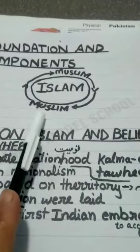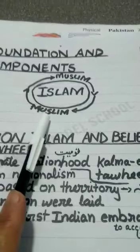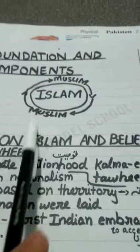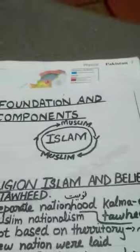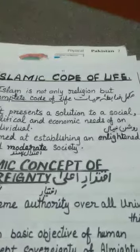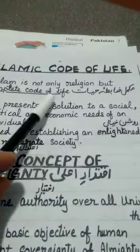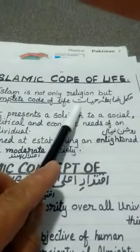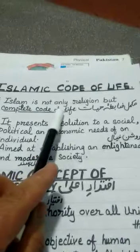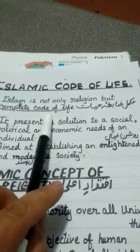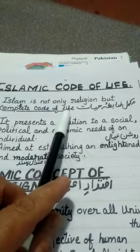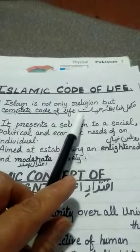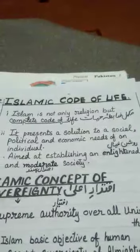The next topic is the Islamic code of life. Islam is not only a religion but a complete code of life — 'mukammal zabt-e-hayat'. It is not just a religion; it is also a guideline for the best life system. It gives us the solution to our social, political, and economic needs.